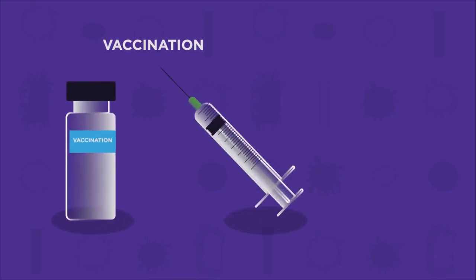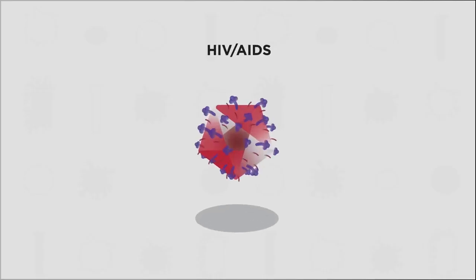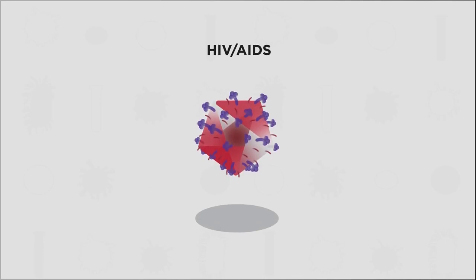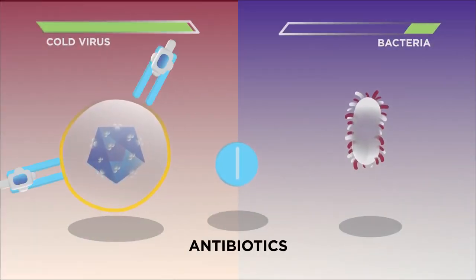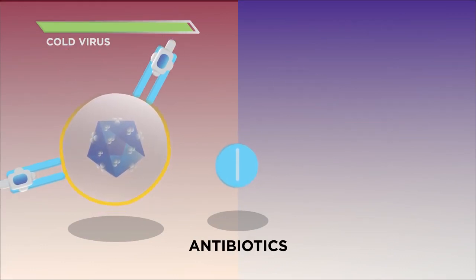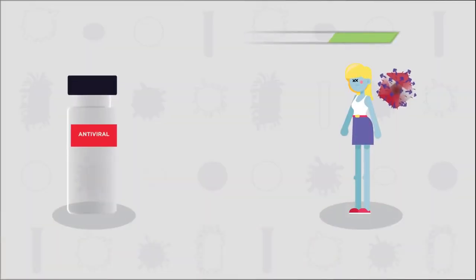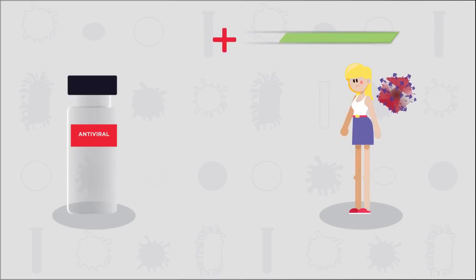Scientists have developed vaccinations against lots of viruses, which have even led to the eradication of some viruses like smallpox as human hosts become immune. However, some viruses like HIV have proved impossible to develop any kind of vaccine for. Antibiotics do not work for viruses — they are only for bacterial infections. If you have a cold or flu, you shouldn't be taking antibiotics; they won't make any difference. There are some antiviral drugs that have been developed, such as the one that dramatically prolongs the life of people affected by HIV.